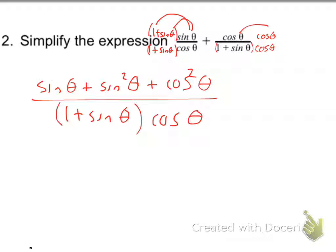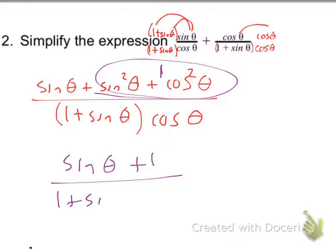Notice anything? Sine squared theta plus cosine squared theta is equal to, oh my goodness, this is equal to one. So I get sine theta plus one over one plus sine theta times cosine theta. So now what happens? We're almost done, what happens now?